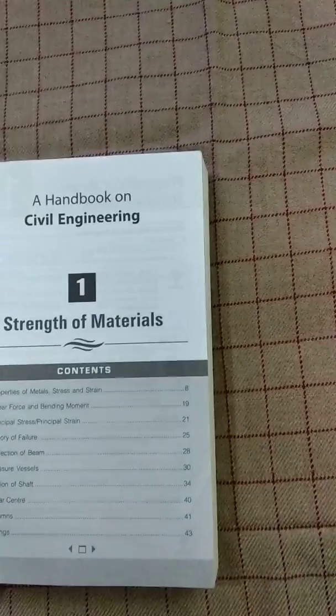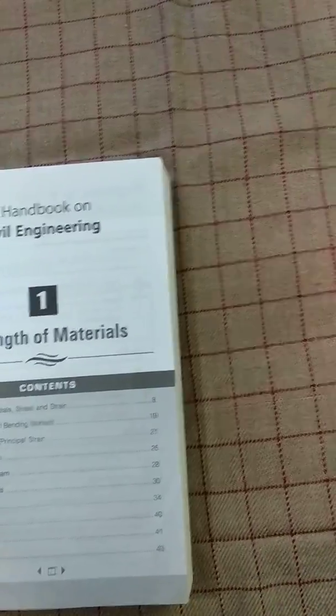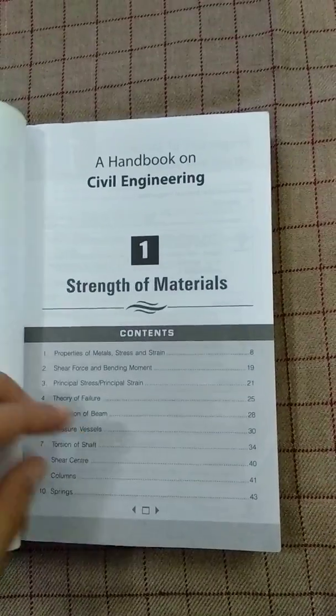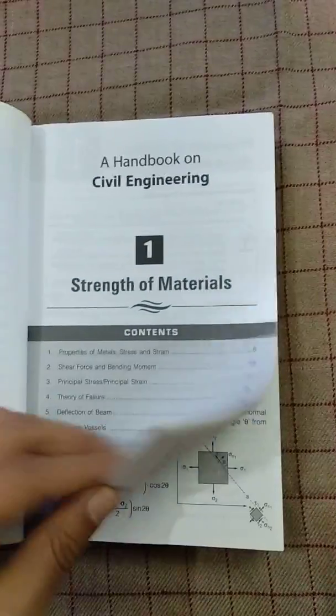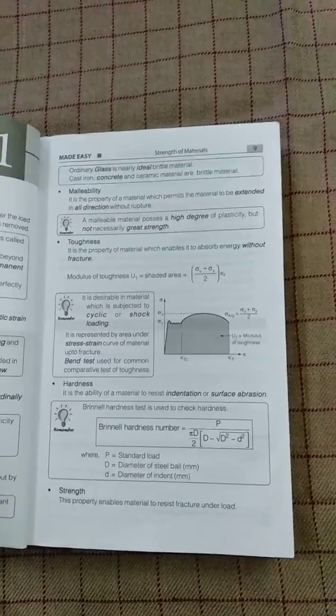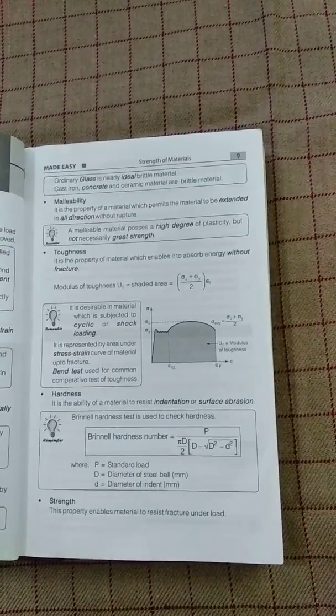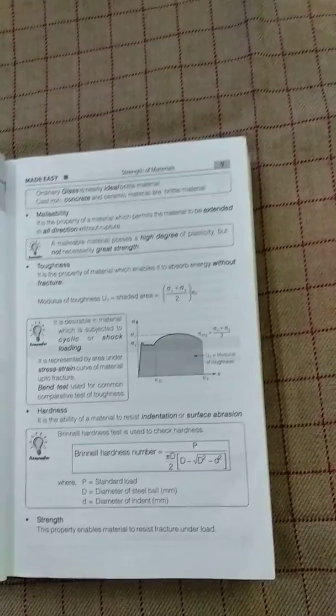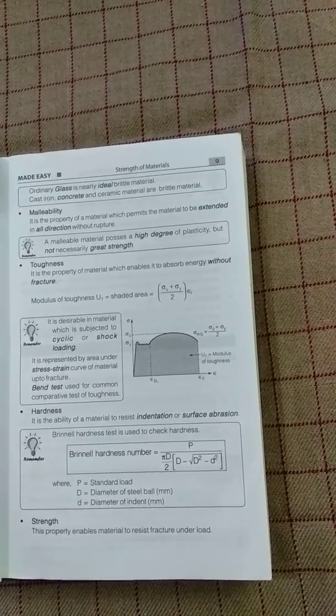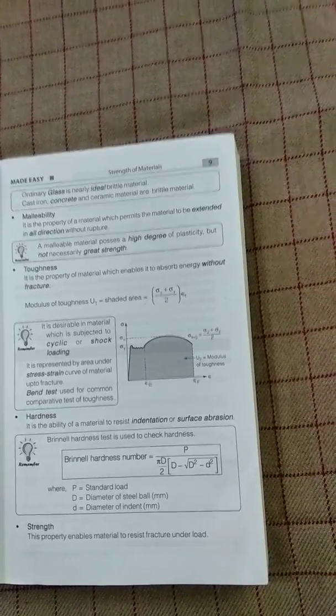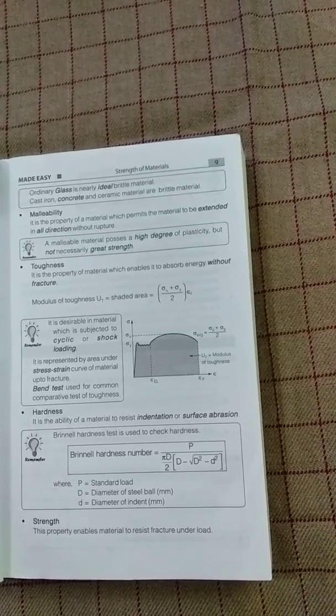So let's start with first unit, strength of materials. There are 10 chapters. Actually, it is a handbook for civil engineering, so it contains all key points of civil engineering.